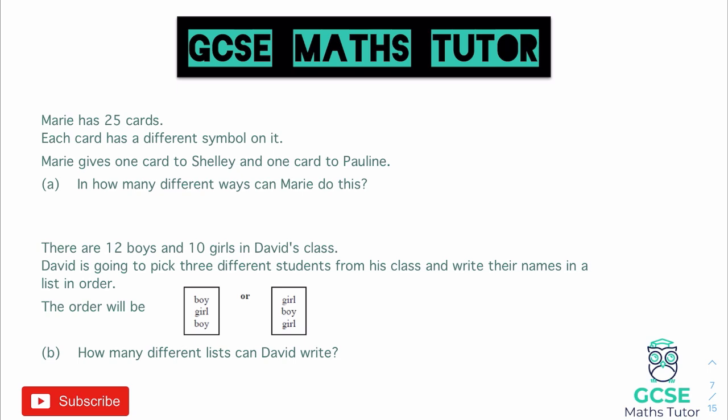In how many different ways can Mary do this? What we do is take the total number of options on the first pick and multiply it by the total number of options on the second pick. This links nicely into probability trees and explains why we multiply going across a probability tree. On the first pick, when she gives a card to Shelley, there are 25 cards — so 25 options. On the second pick, when she gives a card to Pauline, she's already given one away, so there are now 24 options. The product rule — product meaning to multiply — means we do 25 multiplied by 24, which equals 600.